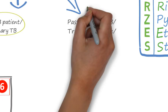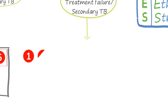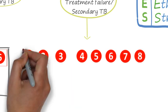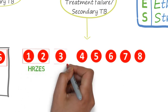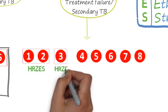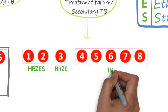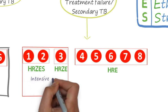For a patient with a past history of TB or a treatment failure patient, drugs are given for eight months continuously. For the first two months, HRZE are given. In the third month, HRZE are also given. In the following five months, HRE are given. Here, the first three months are considered the intensive phase and the next five months are the continuation phase.